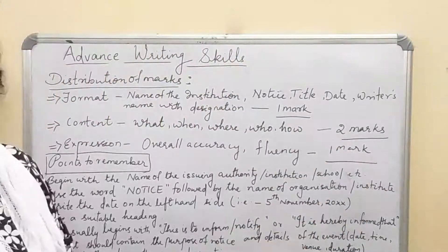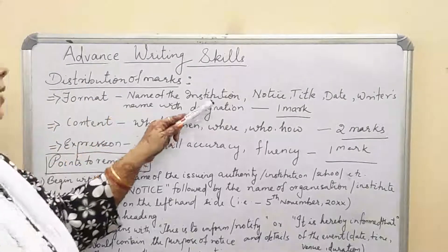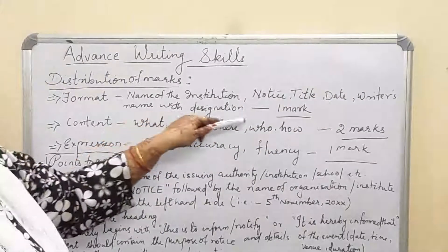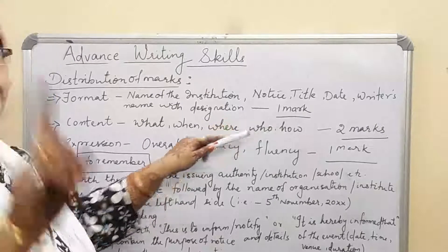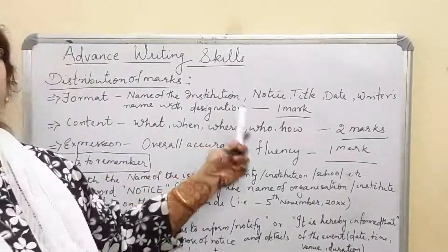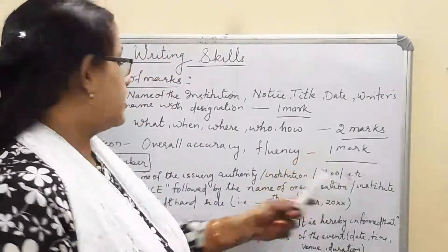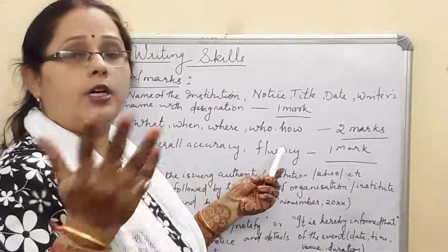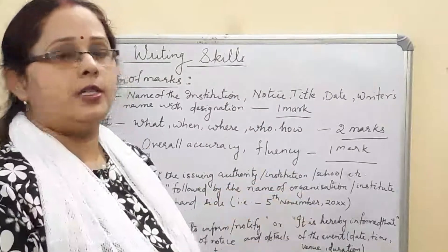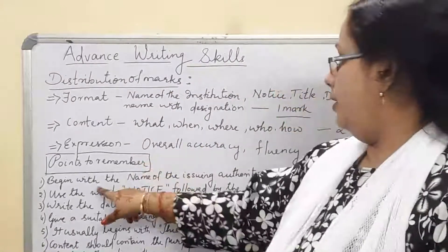This is the marks distribution for the notice. First is the format — name of institution, 'NOTICE', title, date, writer's name with designation — this entire section carries one mark. Second is the content — what, when, where, who, how, venue, timing — that carries two marks. Third is expression — your fluency and accuracy — that carries one mark. So the total is four marks.